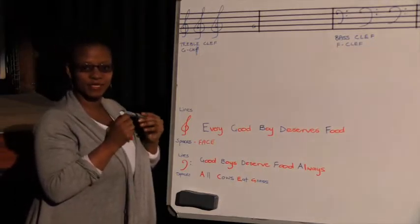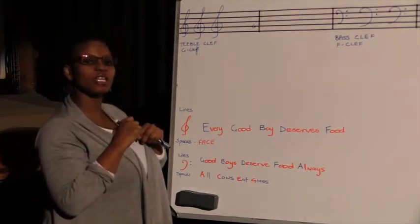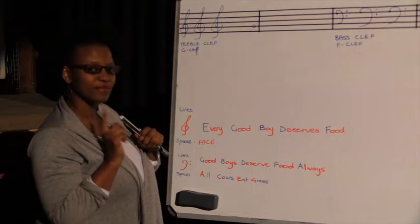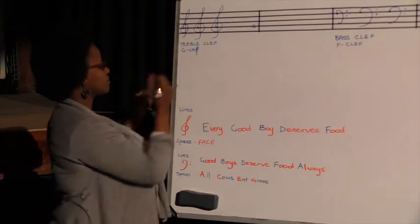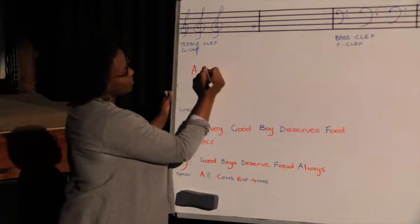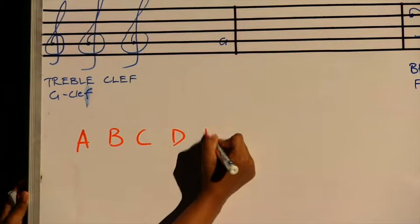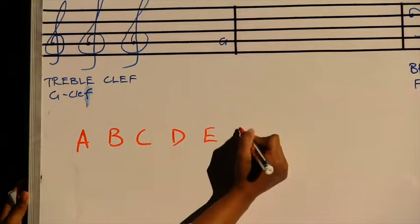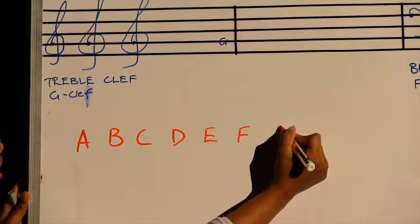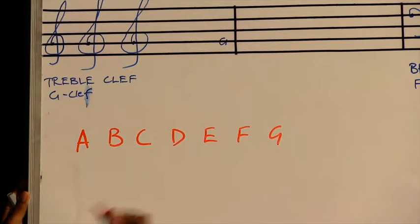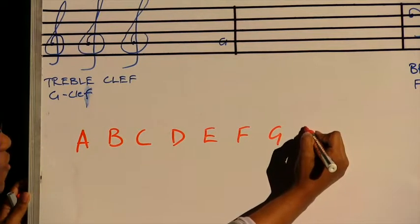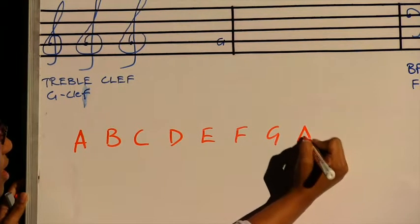Now with the letter names, we have only seven letter names in music: A, B, C, D, E, F, G, then we are going to start over again for our octave on the A.